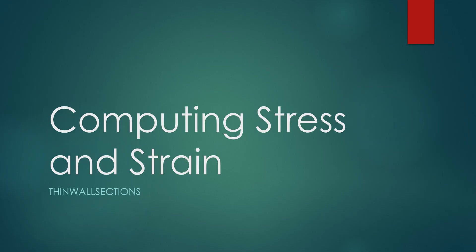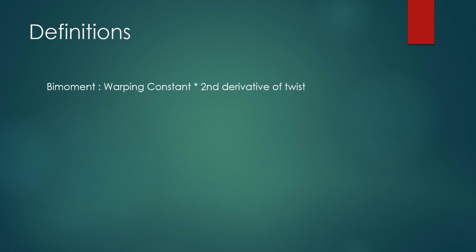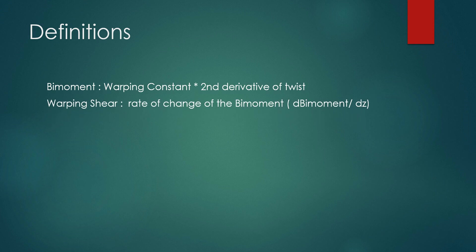Computing stresses and strains. First, a few definitions. Thin-walled sections have some new forces over what you'd find in compact sections. One is bimoment, which is the warping constant times the second derivative of twist. Warping shear, which is the rate of change of bimoment. And warping torsion, which is proportional to the third derivative of twist.